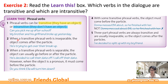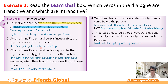Number two: when a transitive phrasal verb is inseparable, the object comes after the particle. Nếu một cụm ngoại động từ không thể tách rời được thì cái tân ngữ sẽ nằm đằng sau cái tiểu từ. Ví dụ: 'He's trying to get over their breakup.' Với cụm động từ 'get over', đây là cụm ngoại động từ không thể tách rời, nên cái tân ngữ 'their breakup' phải đặt đằng sau tiểu từ 'over'.